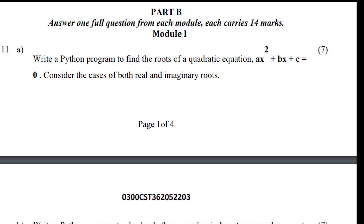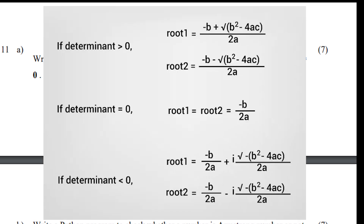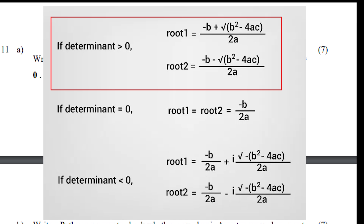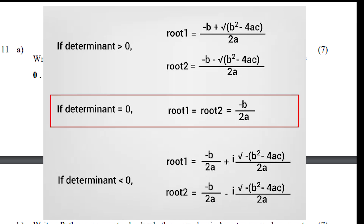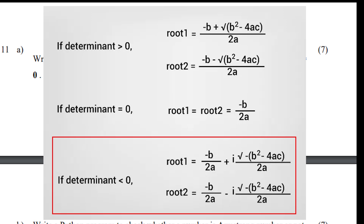The next seven-marks question asks us to consider the cases of both real and imaginary roots of a quadratic equation. We calculate the discriminant: b squared minus 4ac. If discriminant > 0, there are two distinct real solutions — root1 and root2, calculated using the quadratic formula. If discriminant equals 0, root1 equals root2 equals minus b divided by 2a. If discriminant is less than 0, there are complex (imaginary) roots.